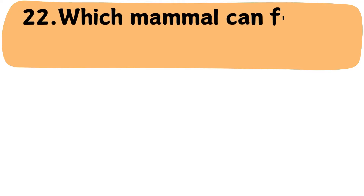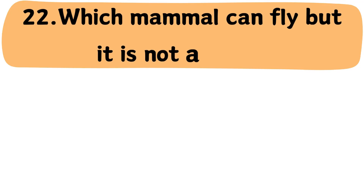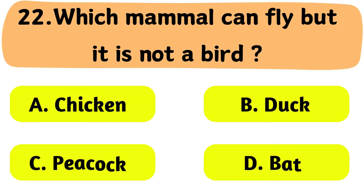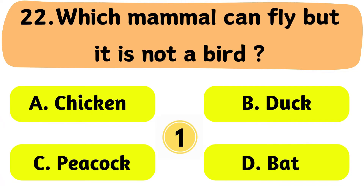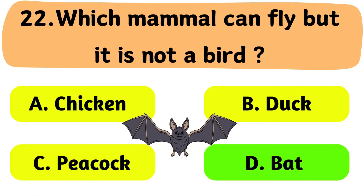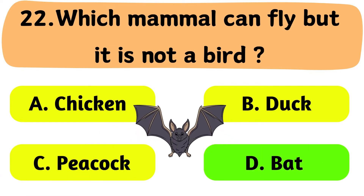Question No. 22: Which mammal can fly but is not a bird? A. Chicken. B. Duck. C. Peacock. D. Bat. The correct answer is Option D: Bat.